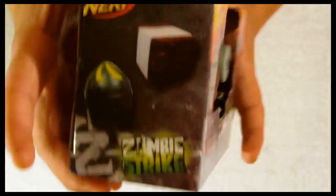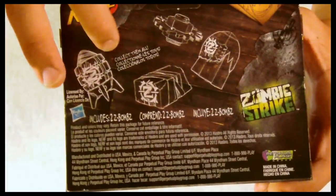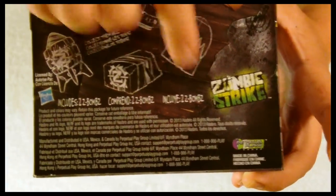On the sides of the box it shows the different types of Z-Bombs that are available. And on the back it has our blueprint design and it simply says collect them all and includes two Z-Bombs. So let's open them up and see what these things are all about.